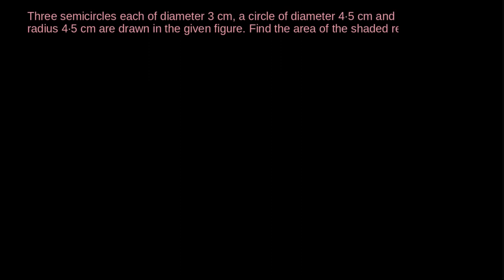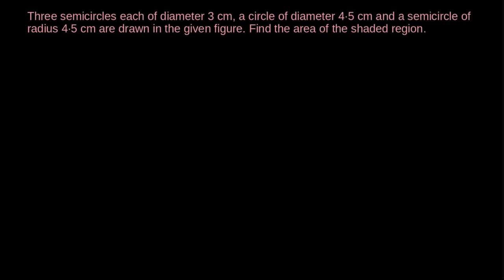Consider the problem: 3 semicircles each of diameter 3 cm, a circle of diameter 4.5 cm, and a semicircle of radius 4.5 cm are drawn in the given figure. Find the area of the shaded region.